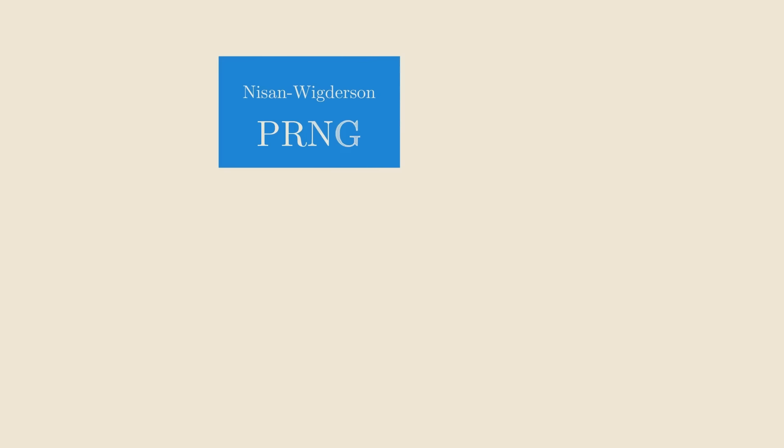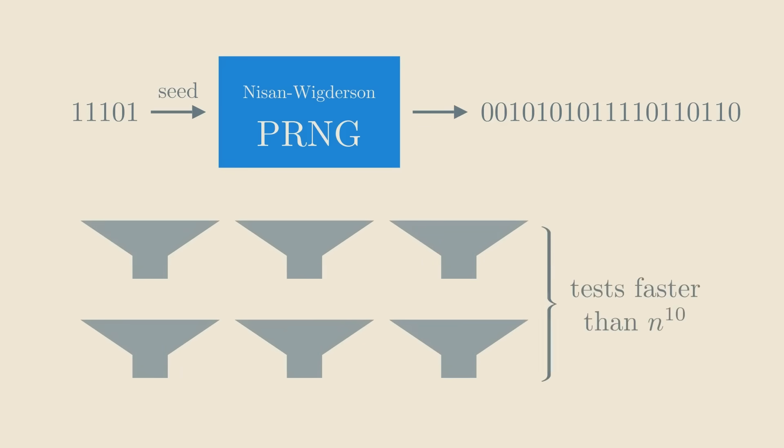The Nisan-Wigderson generator is similar to our pi-based one. If you specify some polynomial function, like n to the 10th, the generator outputs n pseudorandom bits that pass all statistical tests running in time n to the 10th. The generator itself uses more than n to the 10th time, but since it still runs in polynomial time, that's enough for our theoretical purposes.